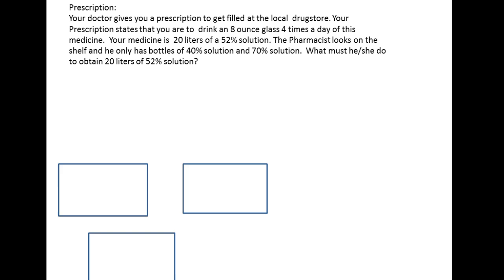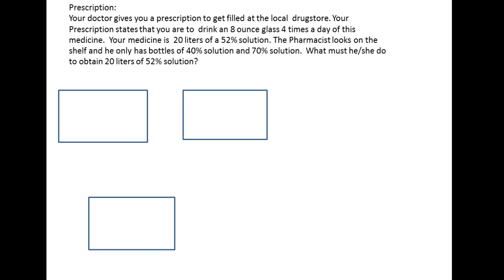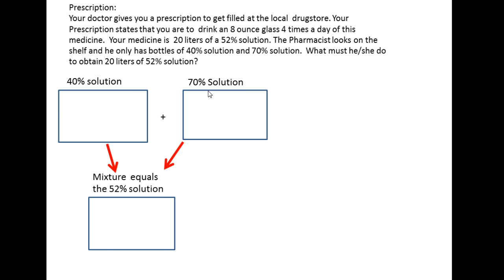One of the ways to approach this is using pictures, because pictures let you know what you're doing. With these word problems, you take the problem that's in words and put it in pictures so you can see what you're doing. So let's draw three boxes. In the boxes we're going to label 40 percent solution plus 70 percent solution, and we're going to mix those together — the mixture will equal the 52 percent solution.